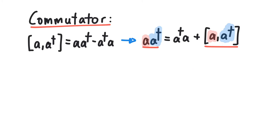However, with operators, we often have a non-vanishing commutator. Like for example, for a and a-dagger, this commutator is plus one.